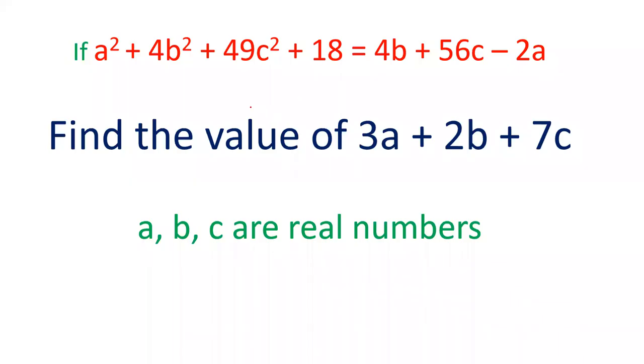Hello friends, welcome to our YouTube channel SSC Selector. In today's video, there is a question that a² + 4b² + 49c² + 18 = 4b + 56c - 2a, and we have to find out the value of 3a + 2b + 7c.